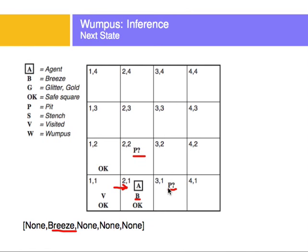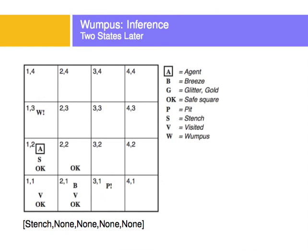Then we start marking this, maybe go up and back to 1,2. We found that this was okay, and because there was no breeze, we know the pit was here. This is how we're inferring the next move — the next assertion. As we move and there's no breeze, we tell the knowledge base there is no pit here. As we move to a square with a stench, the stench sensor is on. We know there's a stench in the square. We tell the knowledge base that the Wumpus is here, because there's no other place where it can be. That's how we tell our knowledge base and ask for the next action at each step.